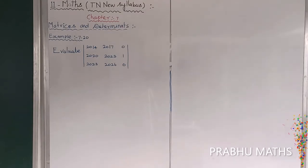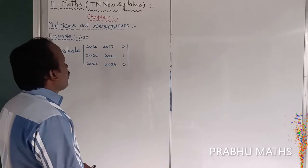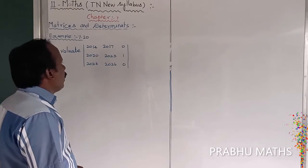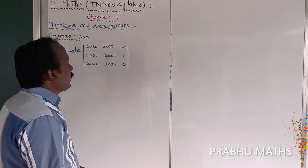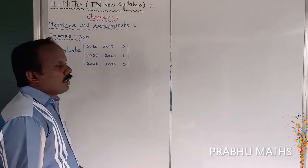Example 7.20. Evaluate, determine the matrix: 2014, 2017, 0; 2020, 2023, 1; next 2023, 2026, next one 0.